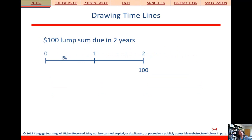So now if we wanted to draw a timeline, let's say for example, we have $100, a lump sum of $100 that's due in two years. So we're going to have a two year timeline. So we have a tick mark for today, a tick mark for one year from now, and a tick mark for two years from now.